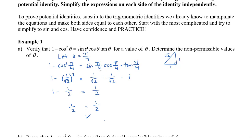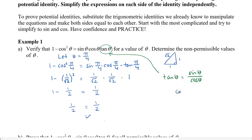Let's determine the non-permissible values. The only term that has something that could cause non-permissible values is tan theta, because tan theta is equal to sin theta divided by cos theta. That might make it easier for you to find the non-permissibles. So we know that cos theta can't equal zero, so theta can't equal pi over two, three pi over two, and so on. We can also say that theta can't equal pi over two plus n pi, where n is an integer.